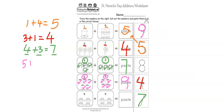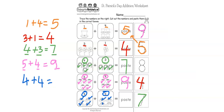So 5 plus 4 equals 9. Let's do another one: what is 4 plus 4? Count and find: 1, 2, 3, 4, 5, 6, 7, 8. 4 plus 4 equals 8, so we write 8 in the box.